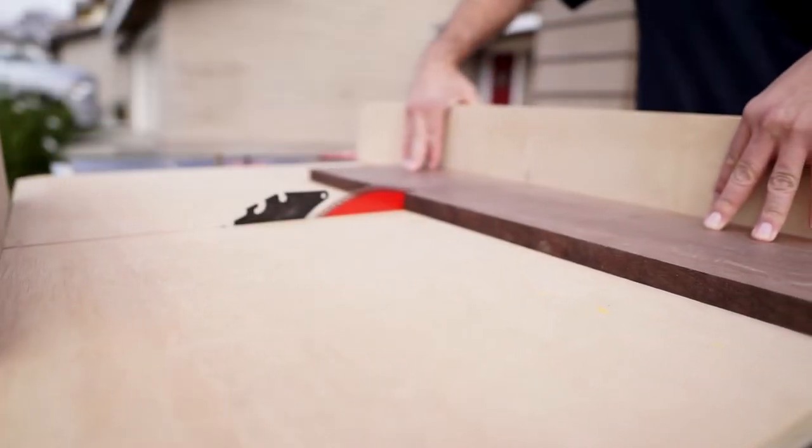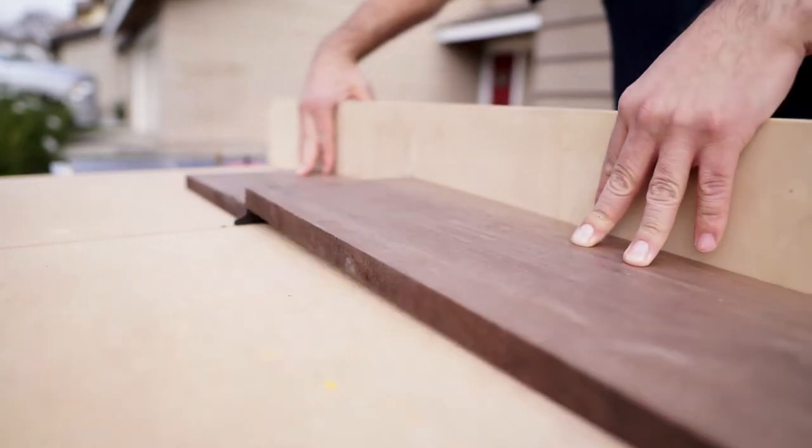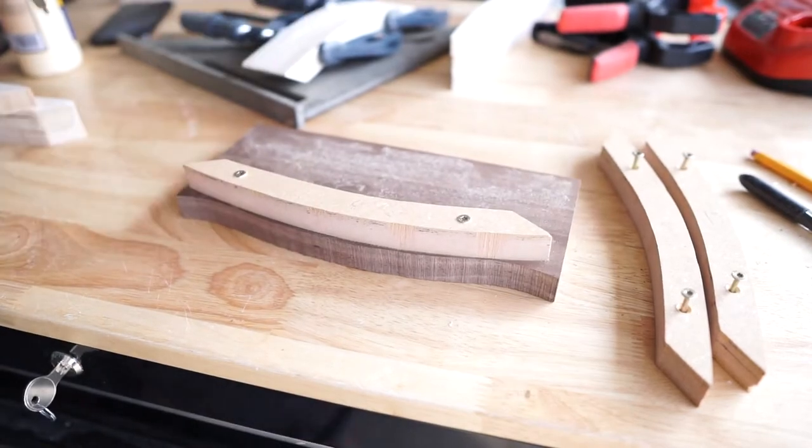To have a nice contrast against the light colored plywood, I used three-quarter inch walnut that I had laying around, then I just followed the same process as before to cut the three sides.